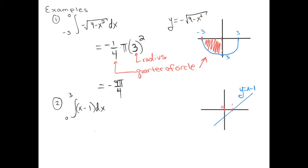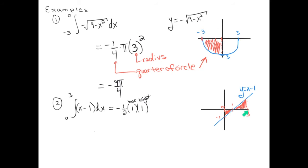So x equals 3 is to the right on the graph. There's a little bit of area under the axis and a bit above the axis. For the area of a triangle, we use one-half base times height. The first triangle, below the x-axis, has base 1 and height 1 (since the y-intercept is negative 1). It's counted as negative because it's under the x-axis, giving negative one-half.